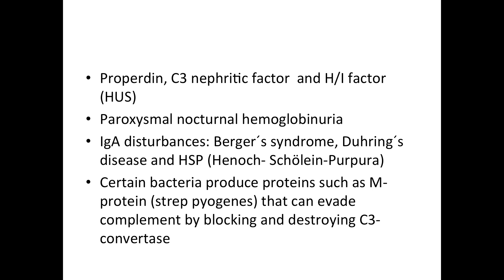IgA disturbances include IgA nephropathy (also known as Berger's syndrome), Duhring's disease (also known as dermatitis herpetiformis), and Henoch-Schönlein purpura. Check the previous video for detail on how to differentiate these from other purpural diseases.